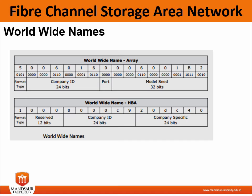Next, we look at Worldwide Names, or WWN. Each device in the Fibre Channel environment is assigned a 64-bit unique identifier called the WWN, that is, the Worldwide Name. The Fibre Channel environment uses two types of WWN: the node name and the port name, also called the Worldwide Port Name.